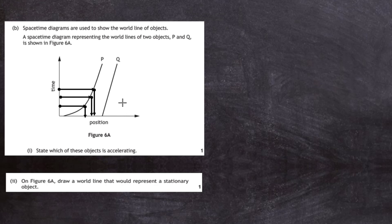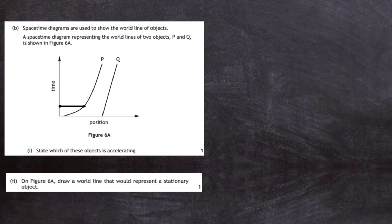The gap between positions is decreasing, so the object is decelerating — it has negative acceleration. As time progresses the positions get even closer together. Because the positions are not evenly spaced out, we conclude that object P's world line represents an accelerating object. Object Q has a constant gradient, meaning its position moves to the right at the same rate as time progresses, so Q has constant speed through space-time.